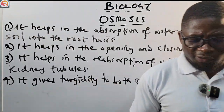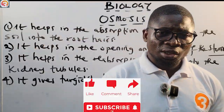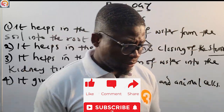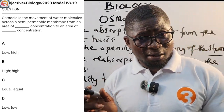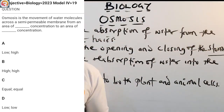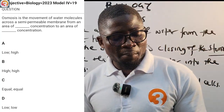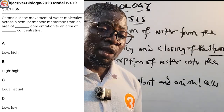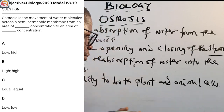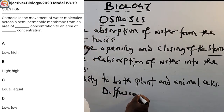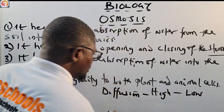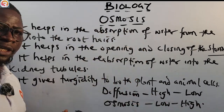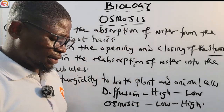Now let's look at questions from the All3Schools JamUp app. Biology 2023 number 19: osmosis is the movement of water molecules across a semi-permeable membrane from an area of low concentration to high concentration — answer is option A, low to high. Please stick this in your memory: diffusion is high to low, and osmosis is low to high. You must take note of that difference.